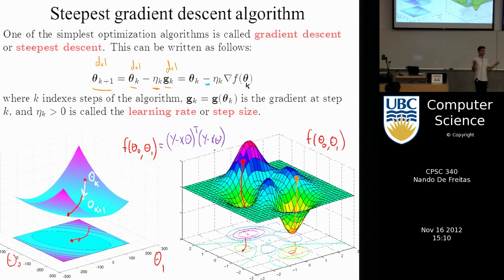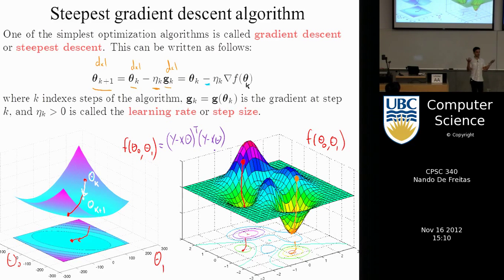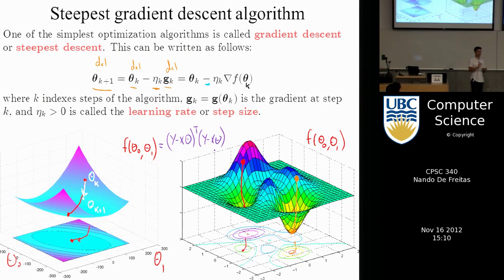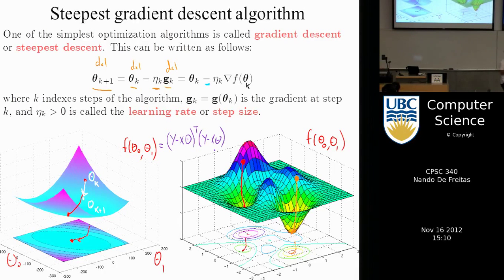As soon as we have a cost function or the negative log likelihood, we differentiate it, get the gradient, and that immediately gives us an algorithm: the new theta equals the old theta minus a step size in the direction of the gradient. The key effort is coming up with a good objective function f for a particular problem.